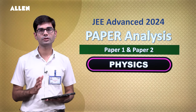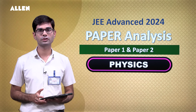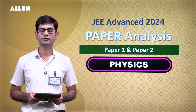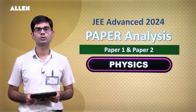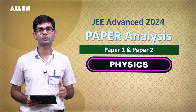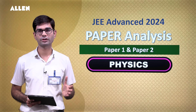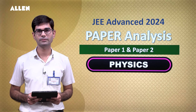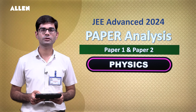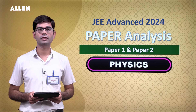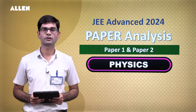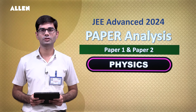Questions from fluid mechanics and optics — including both geometrical optics and wave optics — were asked. Students who prepared well throughout the year didn't face issues in physics; they just needed to manage the speed-accuracy trade-off in the exam. This was the analysis of JEE Advanced physics paper, and video solutions are coming soon — stay tuned. Thank you very much.